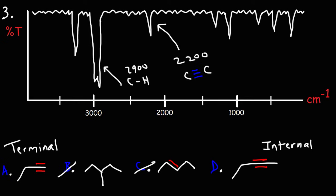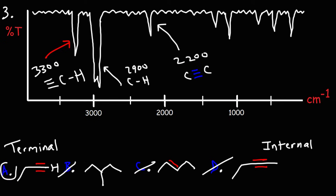The question is: is it a terminal alkyne or an internal alkyne? We do have another signal here around 3300, which corresponds to the alkyne C-H stretch, and this is only present for a terminal alkyne. The internal alkyne doesn't have a hydrogen attached to the triple bond carbon atoms, so D is out. Therefore, answer choice A is correct. That's how you distinguish a terminal alkyne from an internal alkyne — it's the presence of the signal at 3300.